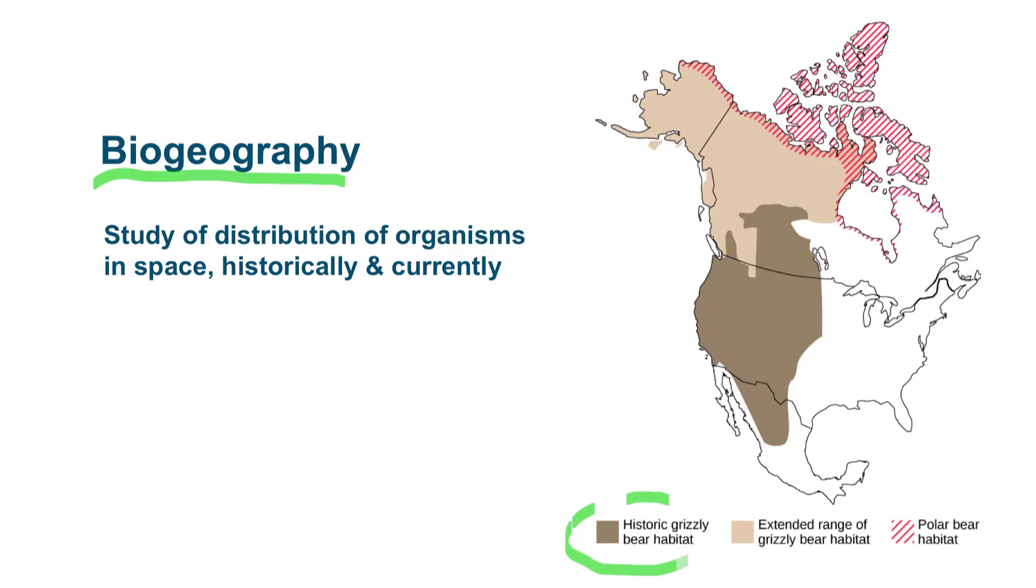The historical grizzly habitat is what's included in this very dark brown section here. The extended range of grizzly bear habitat is where grizzlies are actually extending to nowadays. And the polar bear habitat is this red slashed region over here. As you can see, grizzly bears and polar bears historically did not interact with each other.